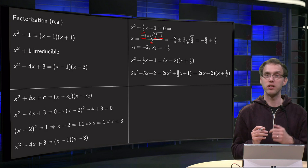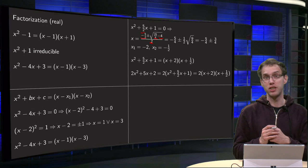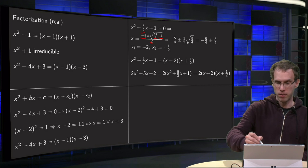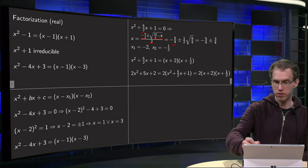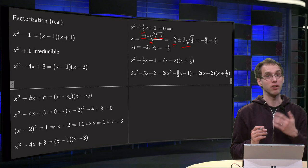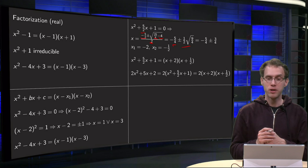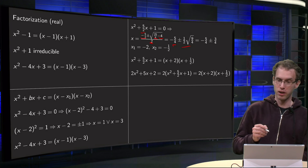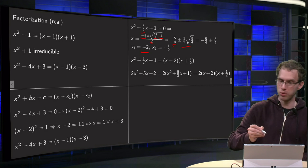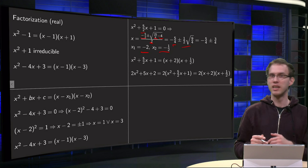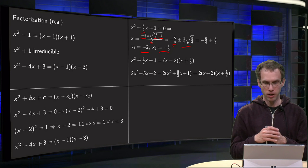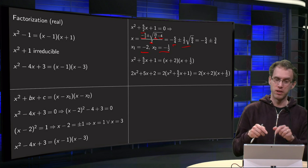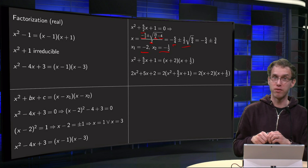So what do we get? Under the square root we get 25/4 - 16/4 = 9/4. So we get, dividing by 2, -5/4 ± 1/2 times the square root of 9/4. Well that works out nice, the square root of 9/4 equals 3/2, so we get -5/4 ± 3/4. So zeros are x₁ = -2 and x₂ = -1/2.